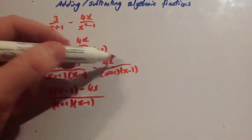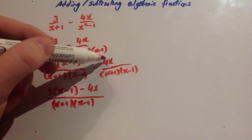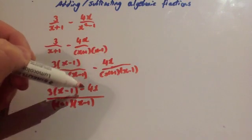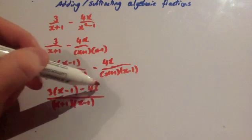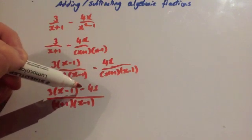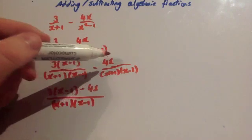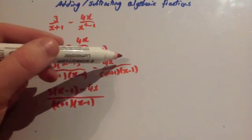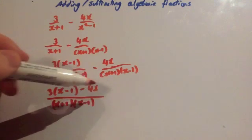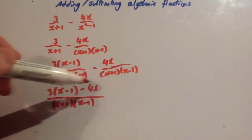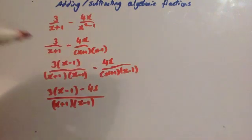Now you've got to be careful here. If there were two terms on the top line, you'd have to do minus bracket and then whatever the two terms were on the numerator — you'd need to do minus times that. For example, if you had 4x minus 3, you'd have to do minus bracket (4x minus 3), and when you expand the brackets you'd get minus 4x plus 3. So you'd have to be careful there.